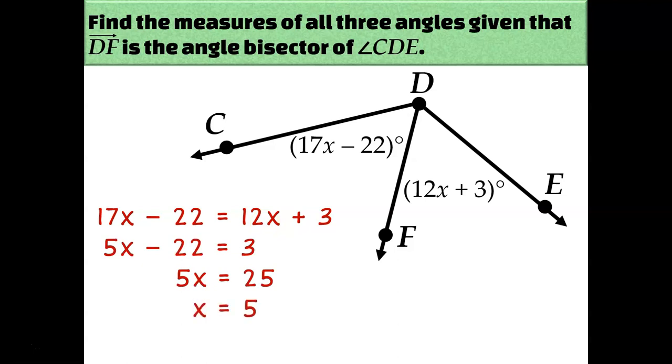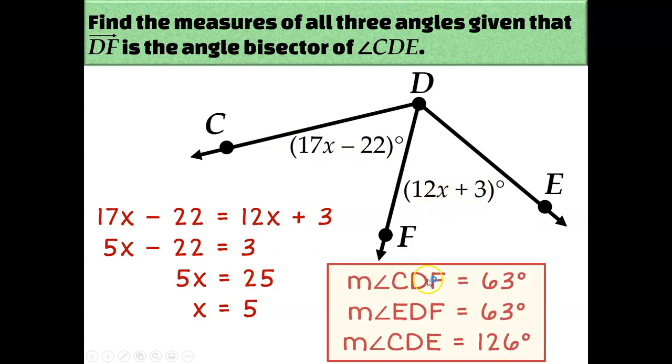But you'll notice it didn't ask what is x, it asked for the angle measures. So I need to plug 5 in to figure out what each of these angle measures are. So I can do 17 times 5 minus 22, and I'll also do 12 times 5 plus 3. Both of those are going to give me an answer of 63. And then to figure out the measure of the entire angle, I can just add those two 63 degree angle measures together and get to the total angle measure of 126 degrees.